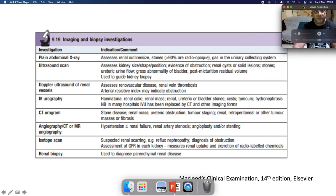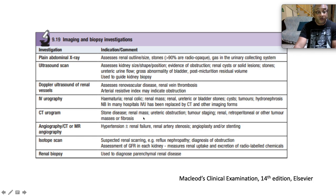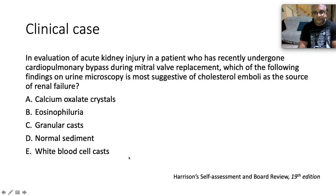Other investigations: plain abdominal X-ray, noting that over 90% of stones are radio-opaque. Ultrasound scan assesses kidney size, shape, and position; looks for obstruction, hydronephrosis, or hydroureter; assesses renal cysts or solid lesions with stones; establishes post-micturition residual volume; and guides kidney biopsy. Doppler ultrasound of renal vessels if suspecting renal artery stenosis, renal vein thrombosis, or renal vascular disease. IV urography or CT urography for urological issues such as stone disease or renal mass tumour staging. Other options include CT angiography, MR angiography, isotope scans, and renal biopsy to diagnose parenchymal renal disease.